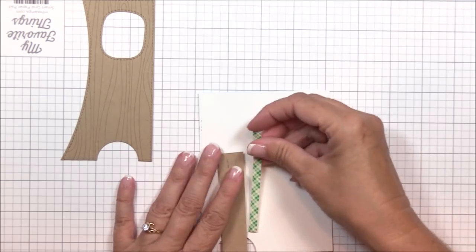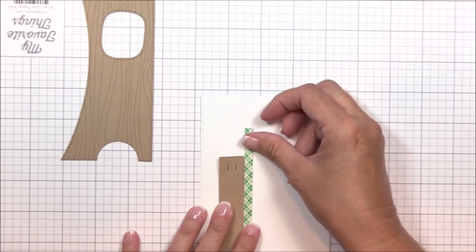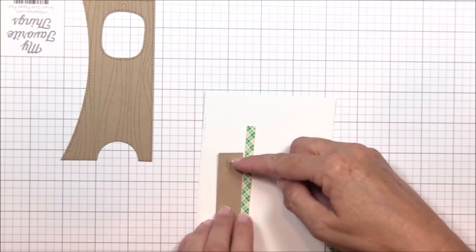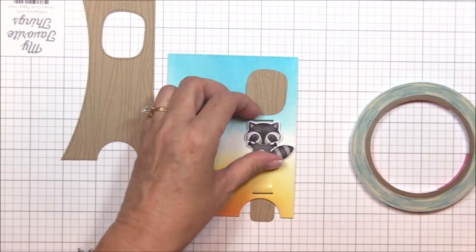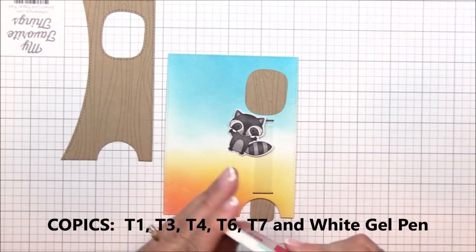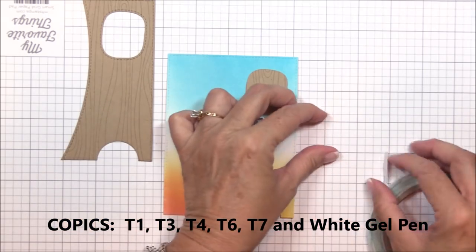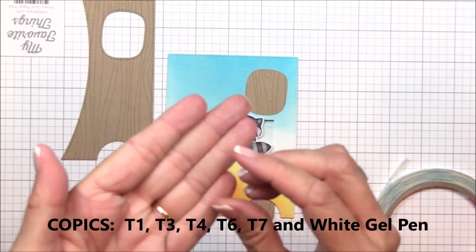To create a channel for the pull tab, or a way to keep the pull tab aligned, I'm adhering some quarter inch double-sided foam tape to both sides of the pull tab. And now we can attach that adorable raccoon from the Friendly Raccoon stamp set that I've stamped, colored, and die cut off camera to our loop mechanism.